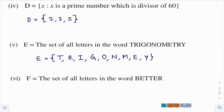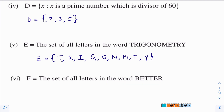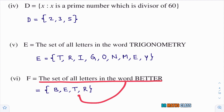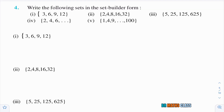Sixth bit: the set of all letters in the word BETTER. Listing letters once each: B, E, T, R. T appears twice and E appears twice, but we list each only once. In roster form: F = {B, E, T, R}.